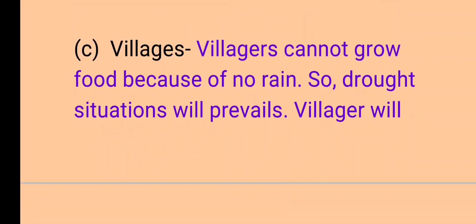C: Effect on villages. Villagers cannot grow food because of no rain, as the rain cycle is disturbed due to deforestation. Therefore, drought will prevail in villages.